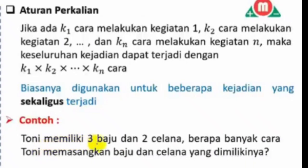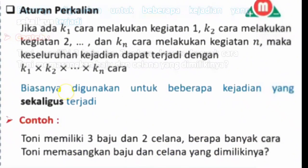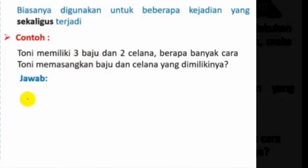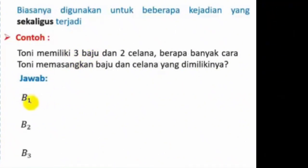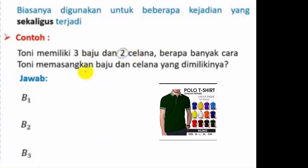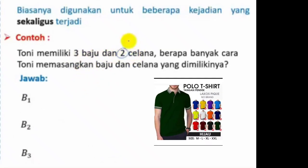Tony memiliki 3 baju dan 2 celana. Berapa banyak cara Tony memasangkan baju dan celana yang dimilikinya? Ilustrasinya seperti ini: 3 baju yang dimiliki oleh Tony yaitu baju 1, baju 2, dan baju 3. Kita akan menggunakan diagram pohon untuk memasangkan antara baju yang dimiliki dan celananya. Celananya dia punya 2 buah, yaitu C1 dan C2.